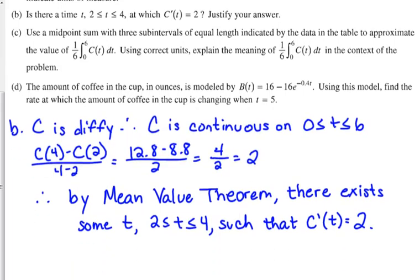Okay, D, the amount of coffee in the cup in ounces, is modeled by this function. Using this model, find the rate at which the amount of coffee in the cup is changing when T equals 5. So, what we need to do is take the derivative. The rate at which the amount is changing, you take the derivative and plug in that time. So, this is a case where you may not exactly know how to do part C, but keep reading. At least look at part D. Don't just assume that part D is harder.